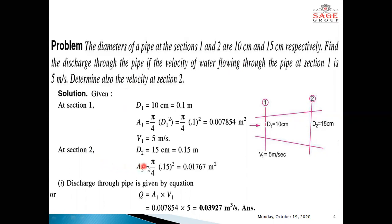At section 2, the diameter D2 equals 15 cm or 0.15 m. The area at section 2, A2 equals pi by 4 times D2 squared, which equals 0.01767 m squared. The discharge through the pipe is given by Q equals A1 into V1. Putting the values of A1 and V1, we get the discharge Q equal to 0.03927 m cube per second.